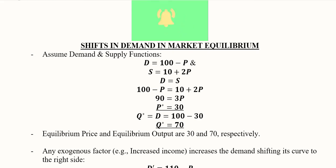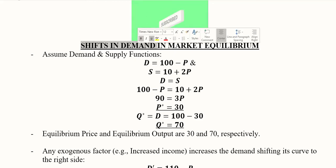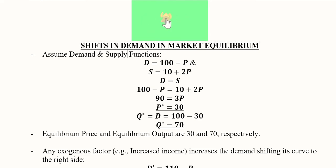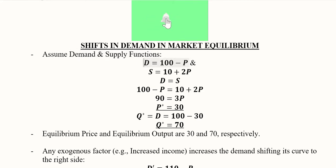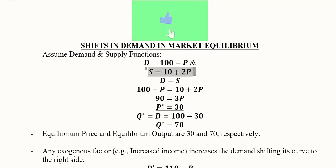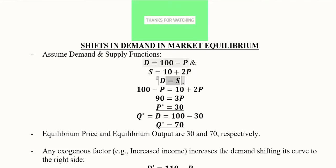In this video we will extend our analysis of market equilibrium by considering shifts in the demand and supply curves. We start with the original demand and supply functions as a numerical instance. The equality of the two functions gives us the equilibrium — this is the conditional equation of equilibrium, whereas these are the two behavioral equations of demand and supply.